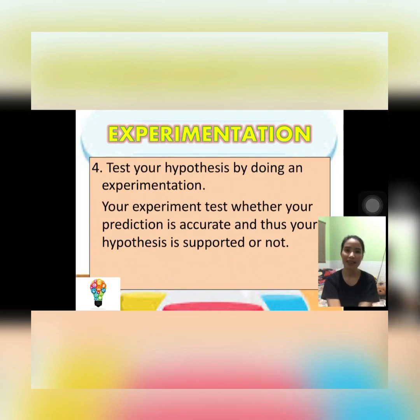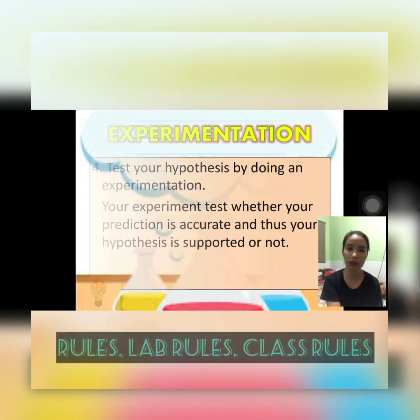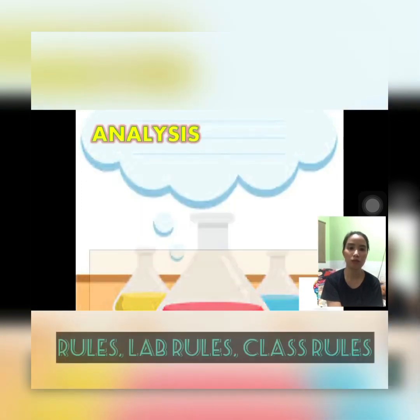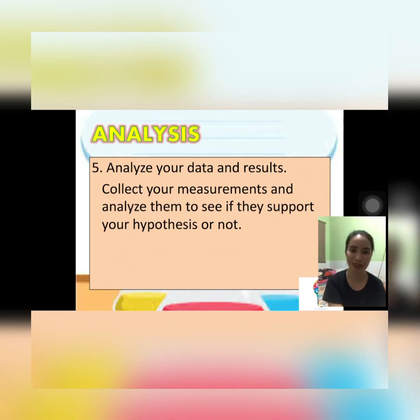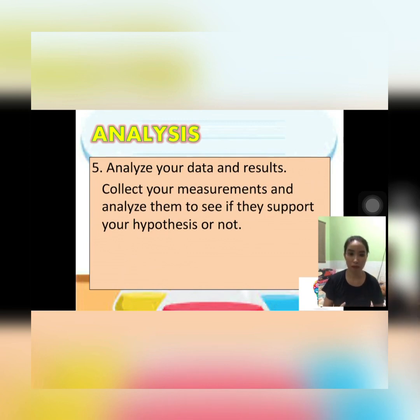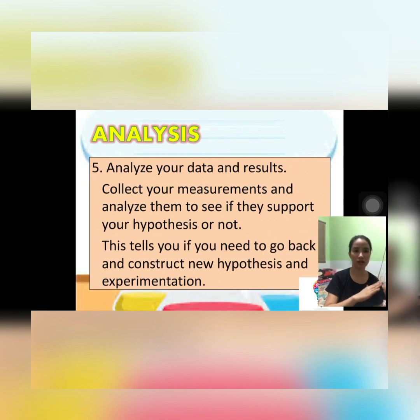In experimentation, you have to follow the rules — the science lab rules and the different classroom rules. Next is analysis: analyze your data and results from your experimentation. Collect your measurements and analyze them to see if they support your hypothesis or not. Gather all the data from your experimentation, and this tells you if you need to go back and construct a new hypothesis or move on to the next step.